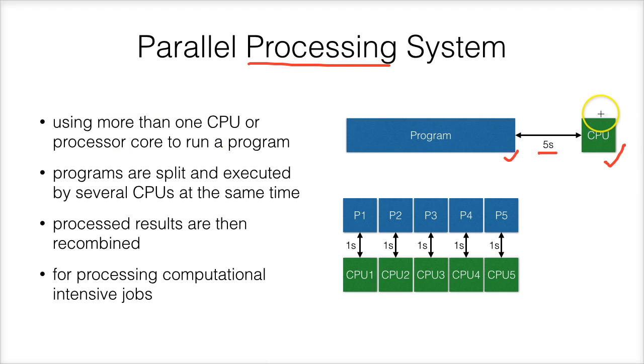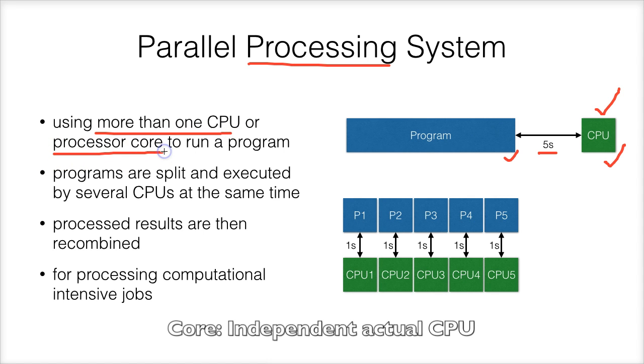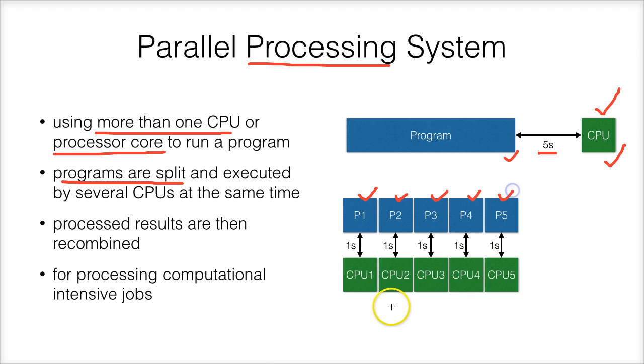This is the time for a single CPU. But if we have more than one CPU or one CPU processing core, then we can split the programs. Let's say we split the program into five parts, five smaller programs, and then we have five CPUs.